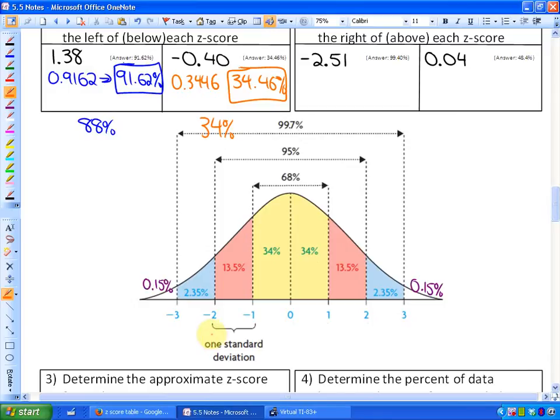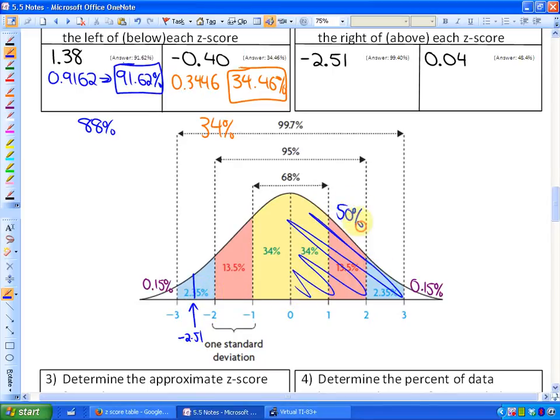So, negative 2.51. Would it be a Z-score roughly here? So what percent would be above it? Well, this would be, so this part here is 50%. This part here, if I combine these two, would be another 47.5%. And this part here, I'm going to guess, is roughly half of 2.35. I'm going to say roughly 1.1. If I combine all of those, I'm going to have approximately, so 50, that's 97.5, 98.6. My estimate here is going to be 98.6%.